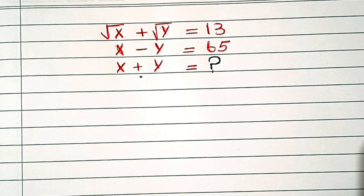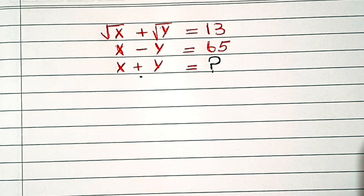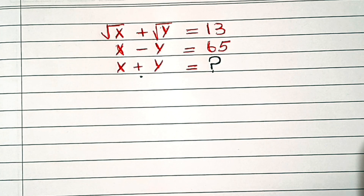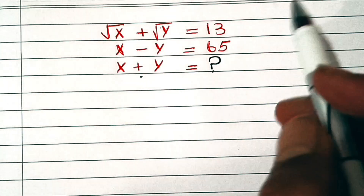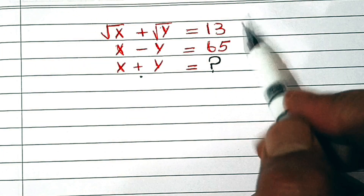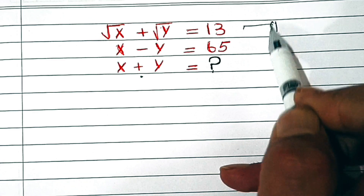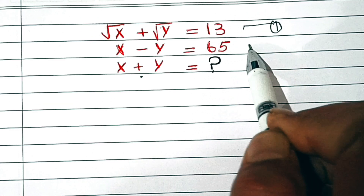We have √x + √y = 13 and x − y = 65. We will find the value of x + y. Let's call the first equation Equation 1.